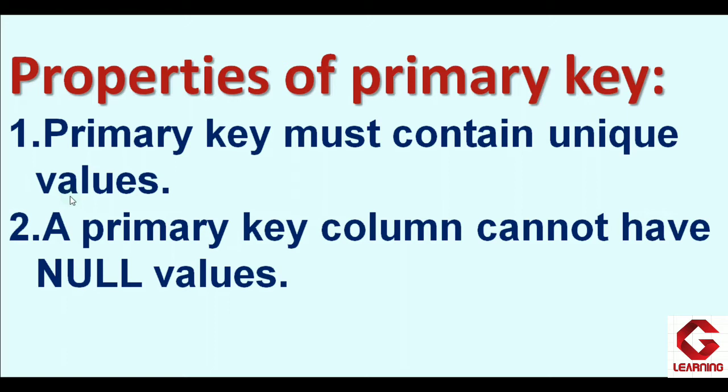The second property is: whenever a particular column is set as the primary key, providing a value in that column is compulsory when adding a new record. A primary key column cannot have a null value — meaning we cannot leave it blank. So whenever we do an entry in the table, it is mandatory to provide a value in the primary key column.